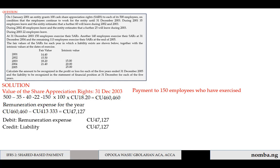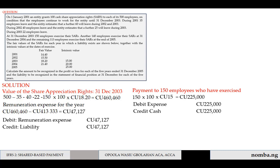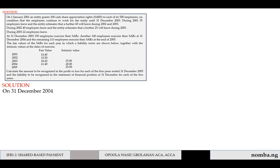For the 150 employees who exercised their SARs in 2003, we need to pay them based on the increase in share price. The payment is 150 × 100 × intrinsic value of 15 = 225,000. We debit expense and credit cash with 225,000.